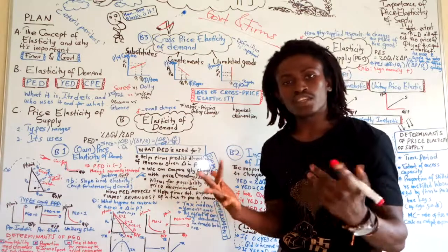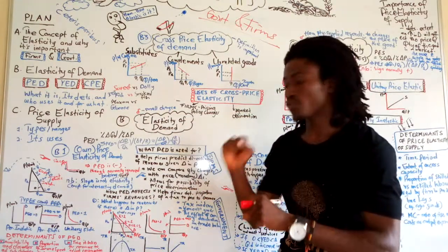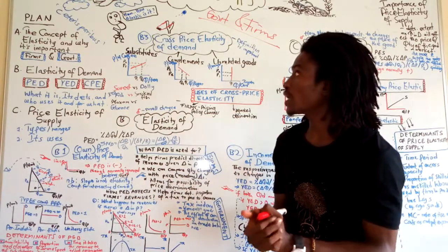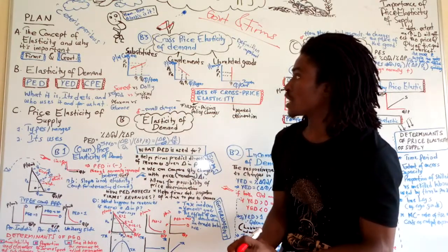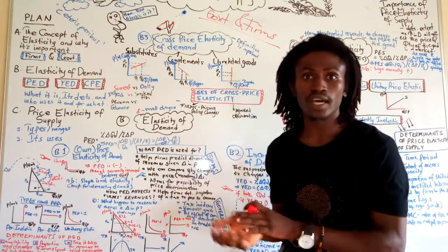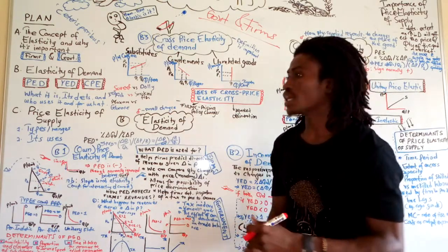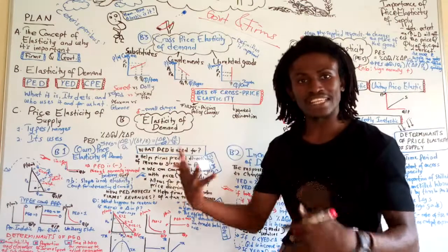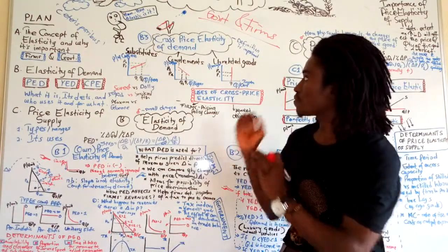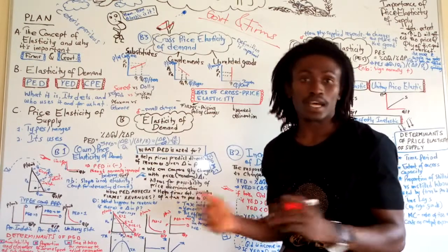In the last lesson on demand and supply, we looked at the theory of demand and supply, the laws of demand and supply. We looked at the behavior of consumers, individuals and suppliers, businesses, producers, and how to get at their behavior to determine the equilibrium price and quantity in a market economy.